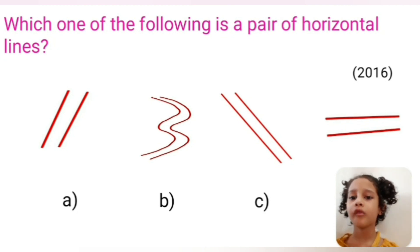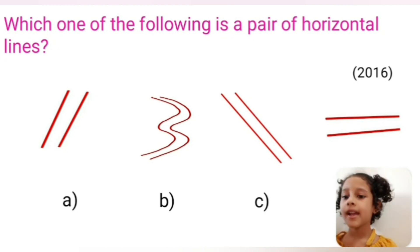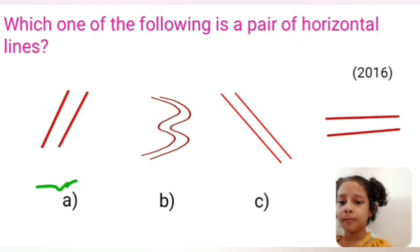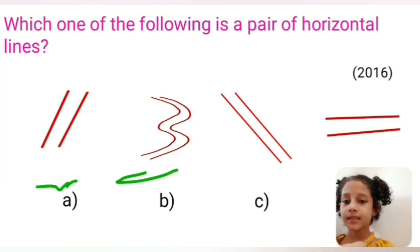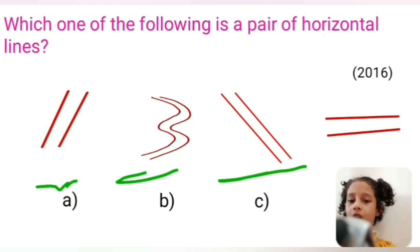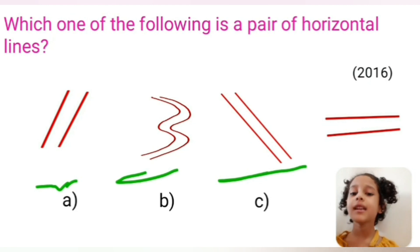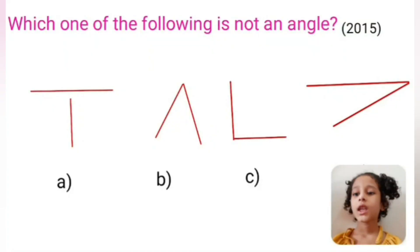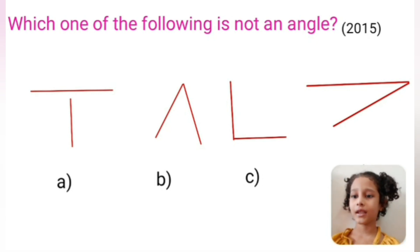Which one of the following is a pair of horizontal lines? Option A: these are slanting lines. Option B: these are curved lines. Option C: these are slanting lines. Option D is our correct option — these are horizontal lines.